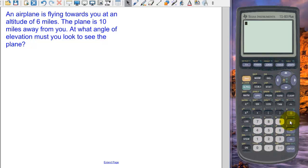So in our first situation here we have an airplane that's flying towards us and it's flying at an altitude of 6 miles. The distance from the plane to us is 10 miles and we want to know what angle of elevation we're looking up at to see that plane.